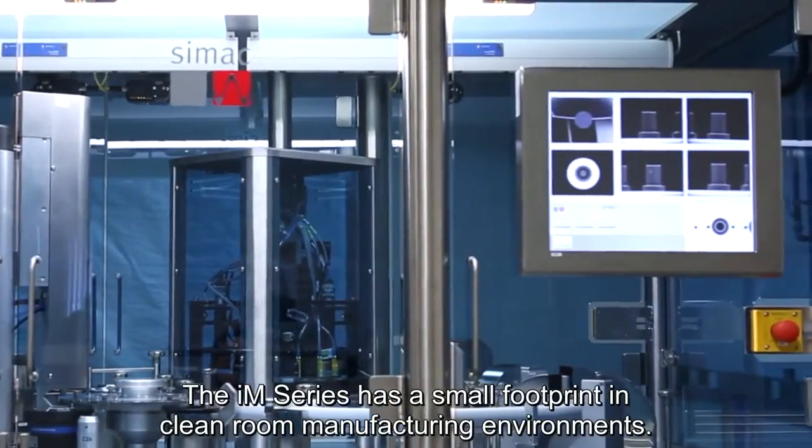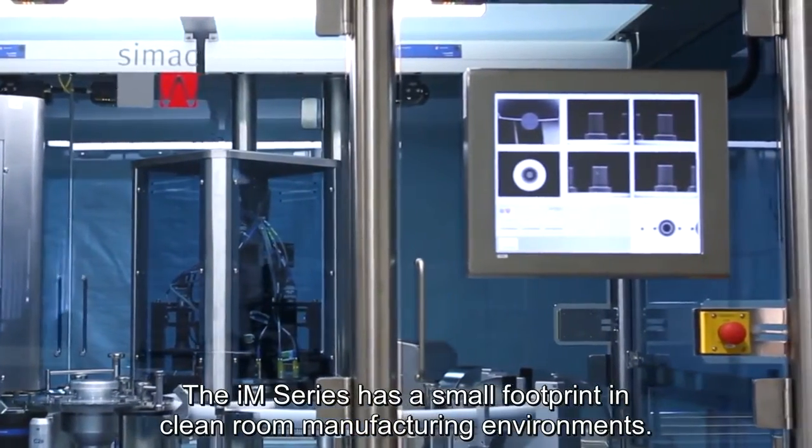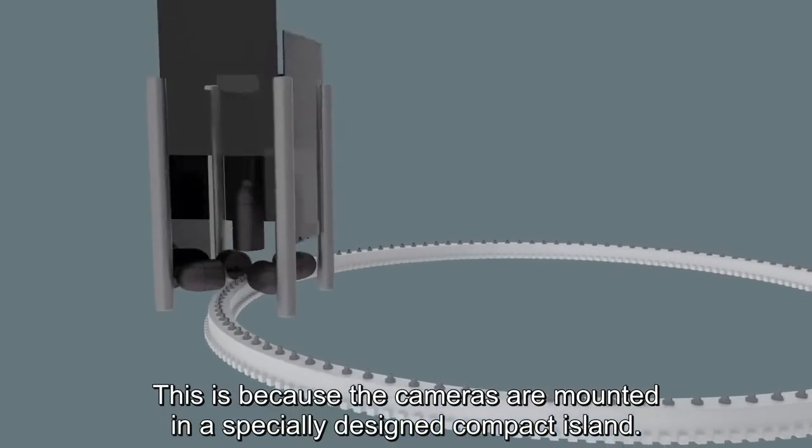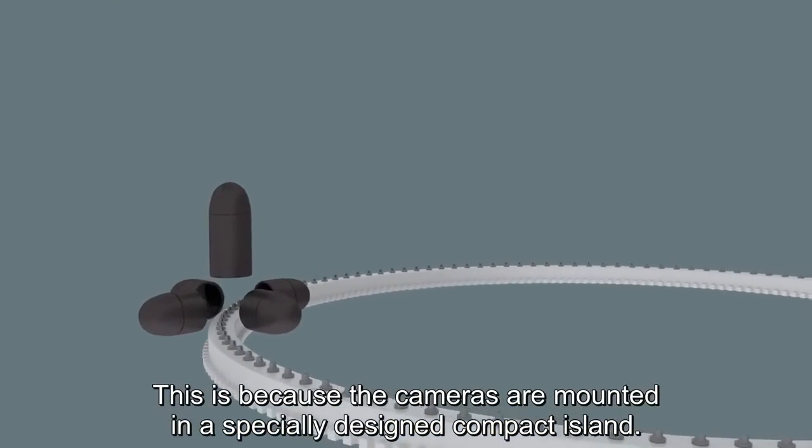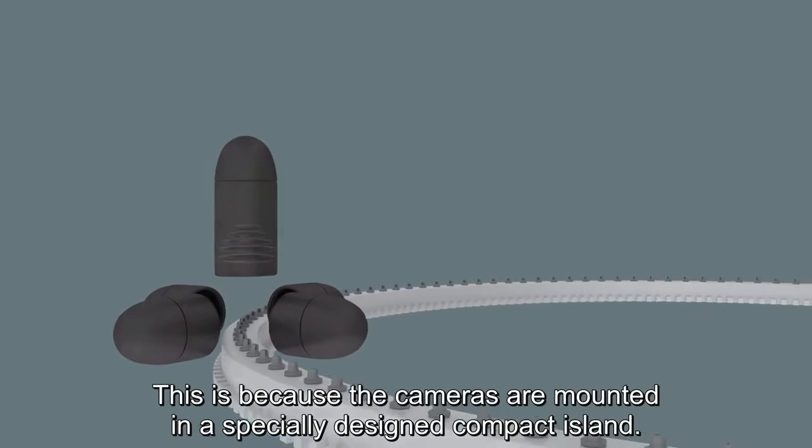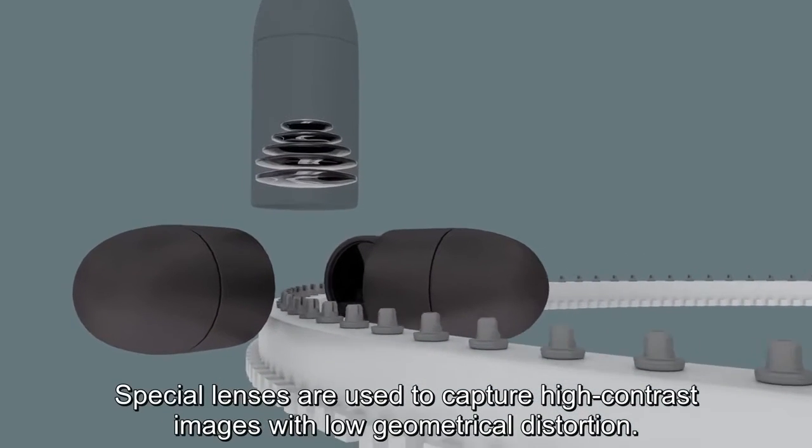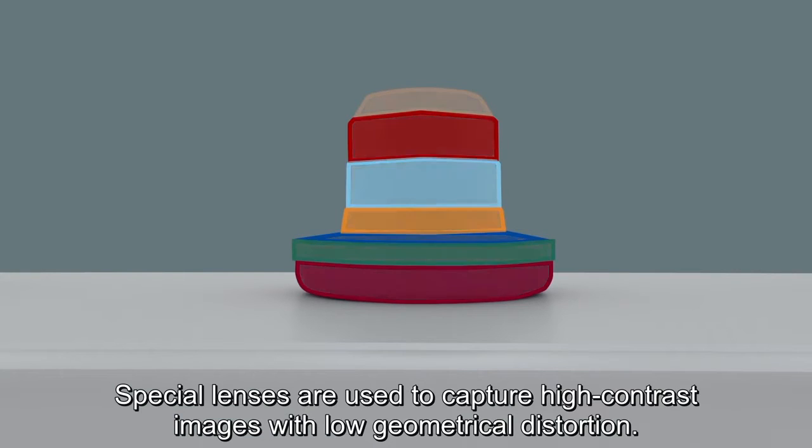The IM series has a small footprint in clean room manufacturing environments. This is because the cameras are mounted in a specially designed compact island. Special lenses are used to capture high contrast images with low geometrical distortion.